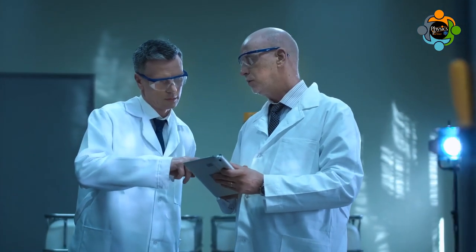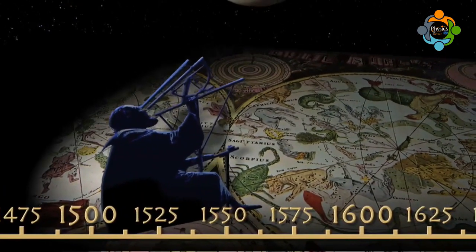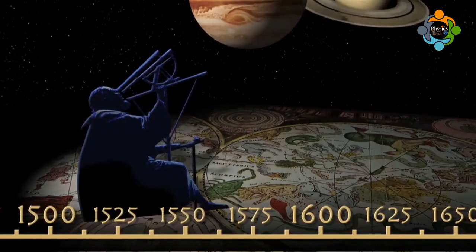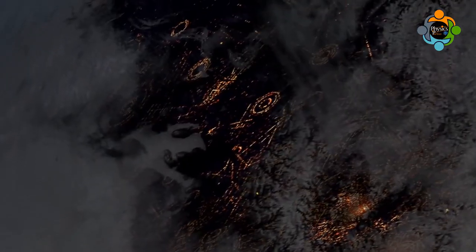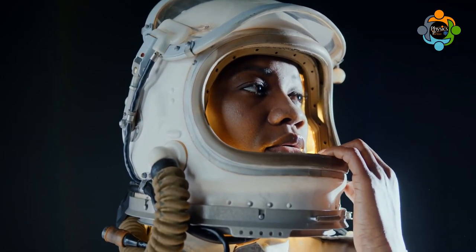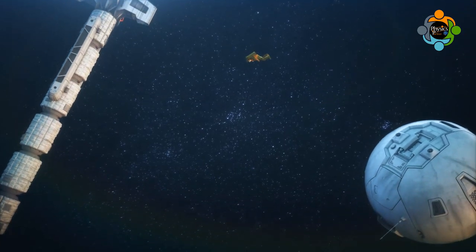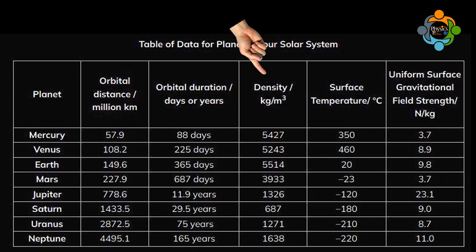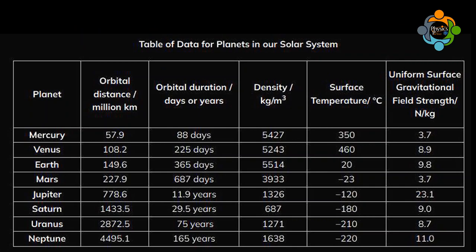Over many years, data about all the planets, moons, and the sun have been collected by astronomers and scientists. This is not just for general knowledge, but also to indicate and understand patterns — factors that affect conditions on the surface of planets and environmental problems that spacecraft or robots would encounter. Look at the chart on your screen carefully, but don't worry — you don't need to remember any numbers for IGCSE exams. You should know how to analyze and interpret planetary data about orbital distance, orbital duration, density, surface temperature, and gravitational field strength at the planet surface.